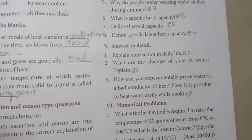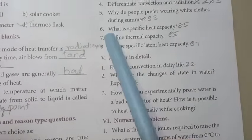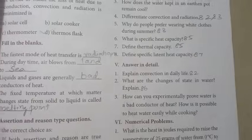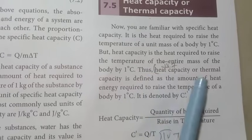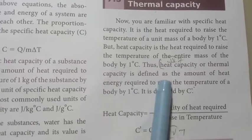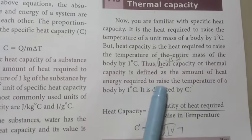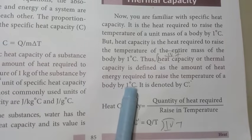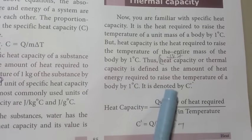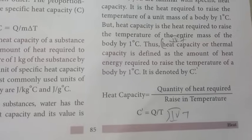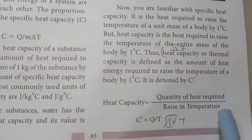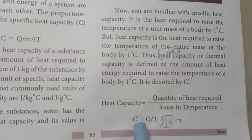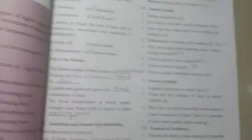Then question number 7: Define thermal capacity. Page number 85, right side. Heat capacity or thermal capacity is defined as the amount of heat energy required to raise the temperature of a body by 1 degree Celsius. It is denoted by C, little C. Heat capacity equals quantity of heat required by raise in temperature. So, C equal Q by T.